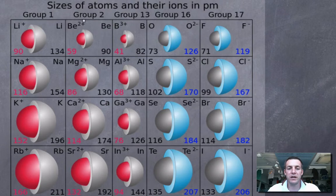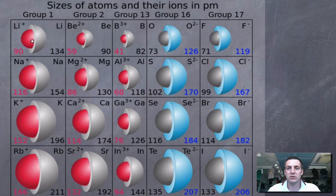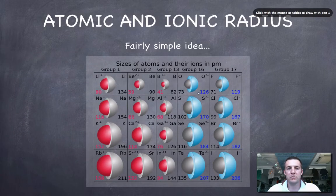You can see that for any atom that loses electrons, the ion is smaller or has a smaller ionic radius than the atom did, because it's lost electrons. For any atom that gains electrons, the ionic radius is larger than the atomic radius because those electrons have been gained, so the atom got bigger. So that's what we mean by atomic and ionic radius.